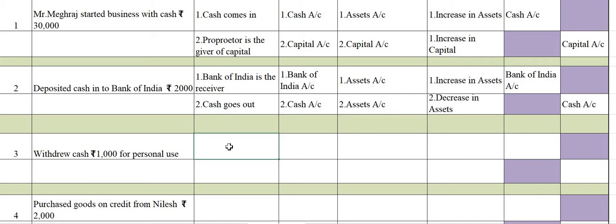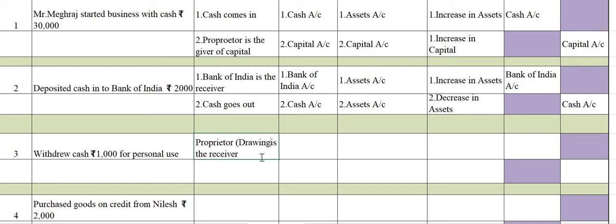Third transaction: Withdrew cash for personal use. You are taking money out for personal use, so proprietor is the receiver and cash is going out of the business. The term we use is not 'proprietor' but 'drawings account' — I've written 'drawings' in the bracket. So drawings account is involved, and the second account is cash account.